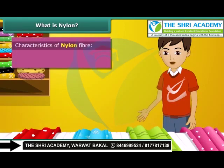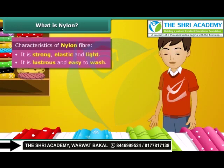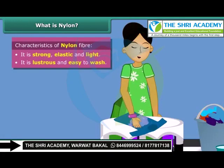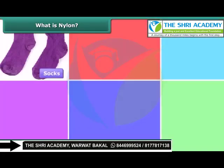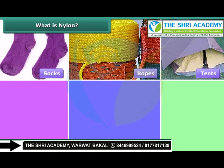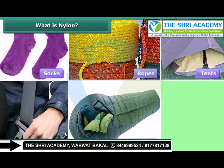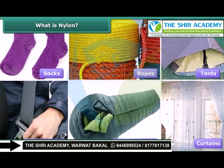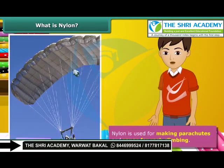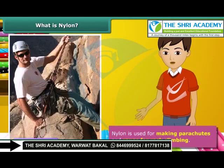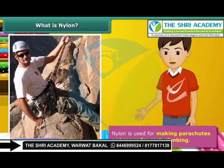Nylon fiber is strong, elastic, light, lustrous and easy to wash. It is used in making many articles such as socks, ropes, tents, car seat belts, sleeping bags, curtains, etc. Can you guess which fiber is used for making parachutes and ropes for rock climbing? It is nylon fiber, since it is stronger than even a steel wire.